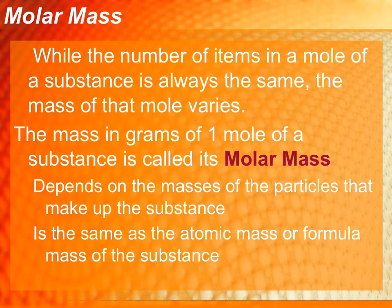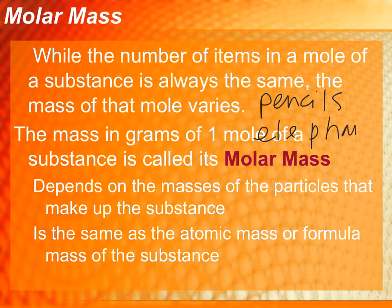So this is kind of a hard concept to get your brain around. While the number of items in a mole of a substance is always the same, the mass of that mole is going to vary. If I had a mole of pencils, it would be 6.02 times 10 to the 23rd pencils. If I had a mole of elephants, it would be 6.02 times 10 to the 23rd elephants. It's the same number of pencils and the same number of elephants, but if I was to weigh how much my mole of pencils weighs and then how much my mole of elephants weighs, hopefully you can see that my elephants would have a larger mass than the pencils, even though there's the same number of items present.